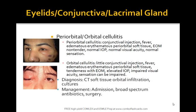Here is a picture of periorbital cellulitis and orbital cellulitis. Periorbital cellulitis presents with conjunctivitis, fever, periorbital soft tissue swelling, possible otitis media, non-tender palpation of areas around the eye, normal intraocular pressure, normal visual acuity, and normal sensation. In periorbital cellulitis, many findings are normal.